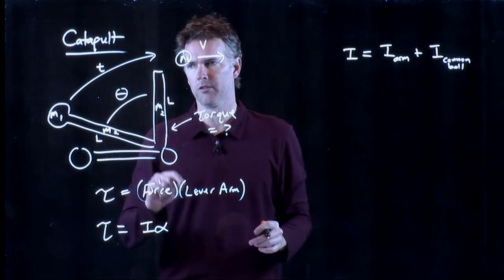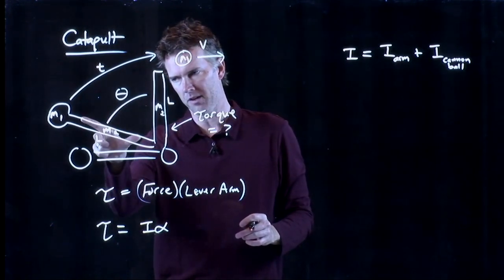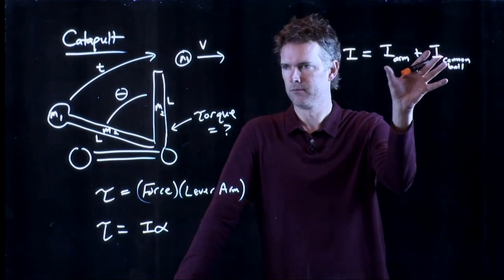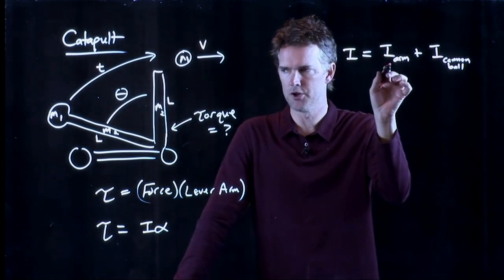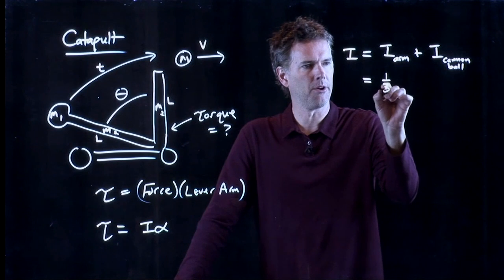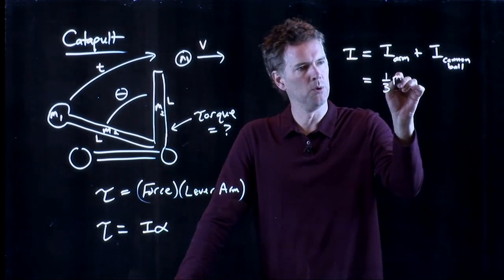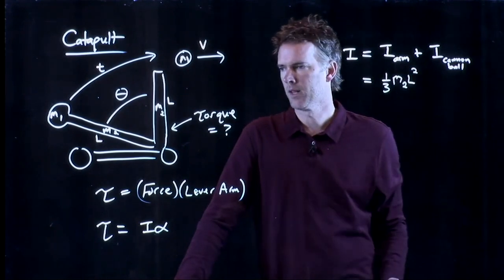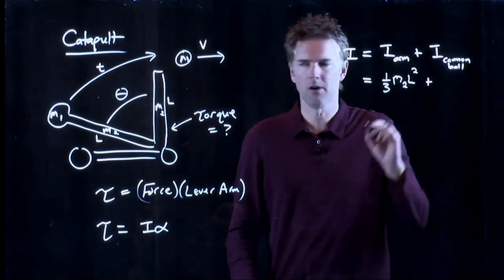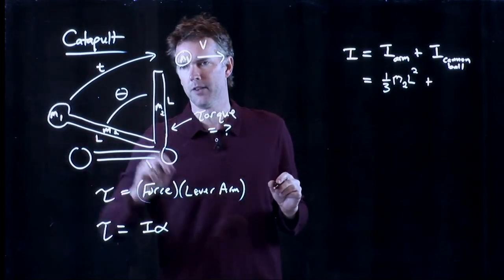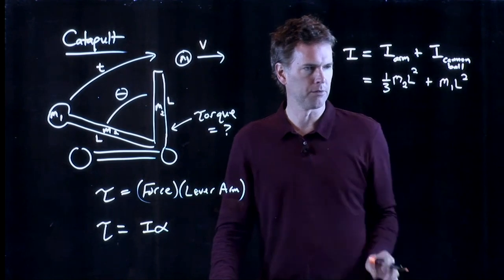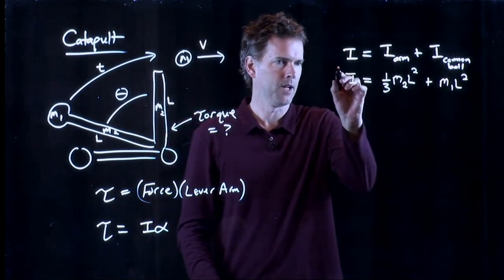plus I of the cannonball. And we have two things there. We have not only this pole, the arm itself, but we have the item that we're launching. And we can figure those out. We know what the moment of inertia of a uniform beam is. It is one third M2L squared. That's a uniform beam rotated through one end. That's the moment of inertia. And we also know what the moment of inertia of the cannonball is at the end. It is just M1 times L squared. So we know I.